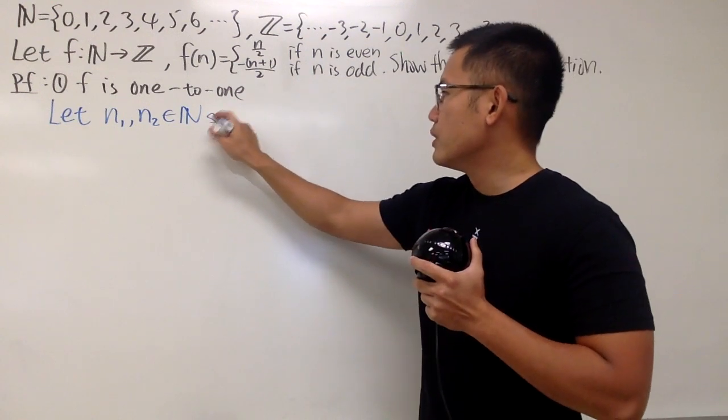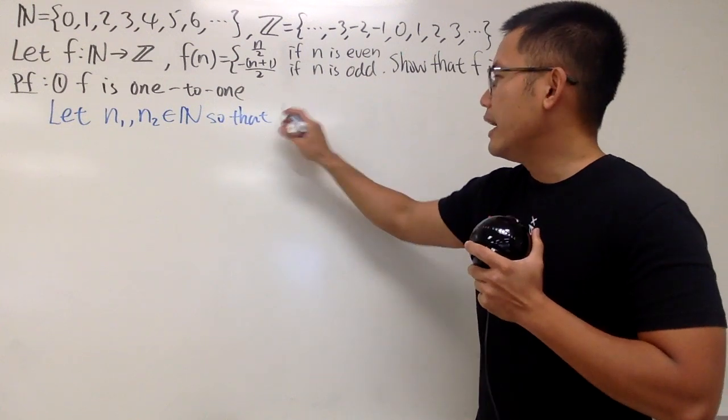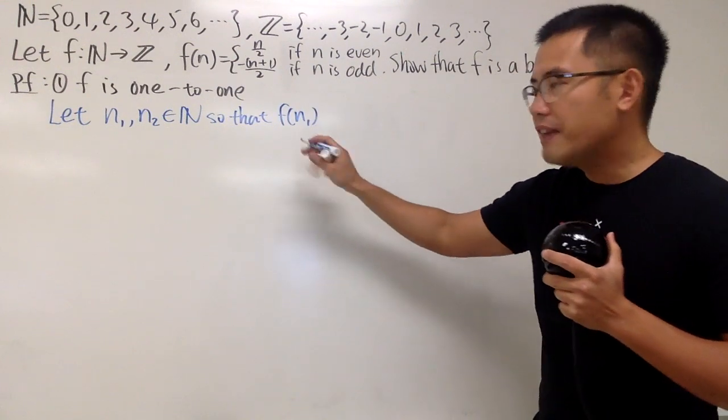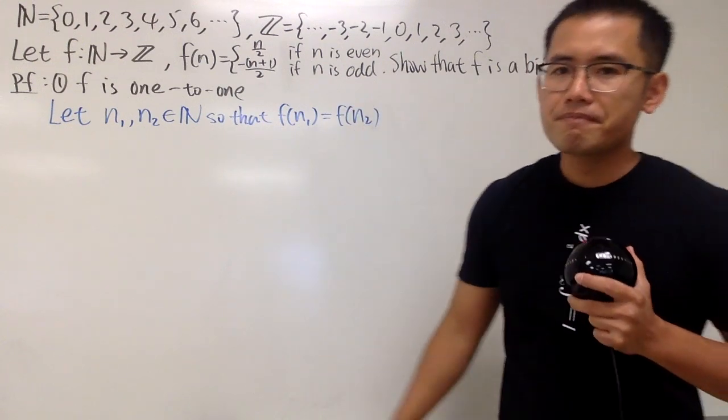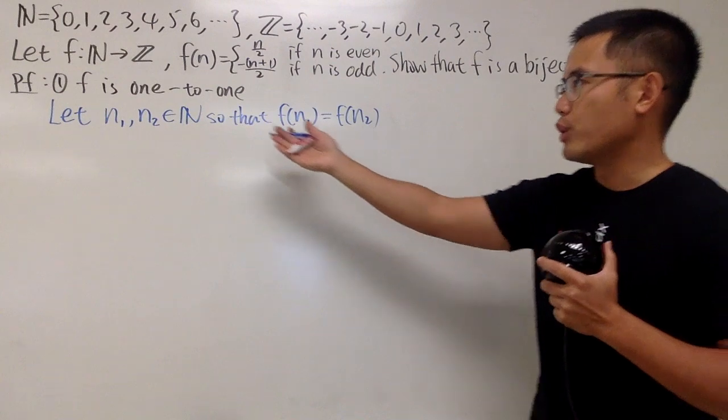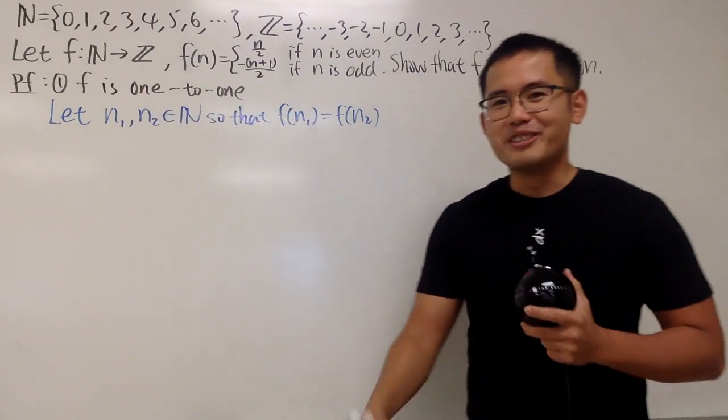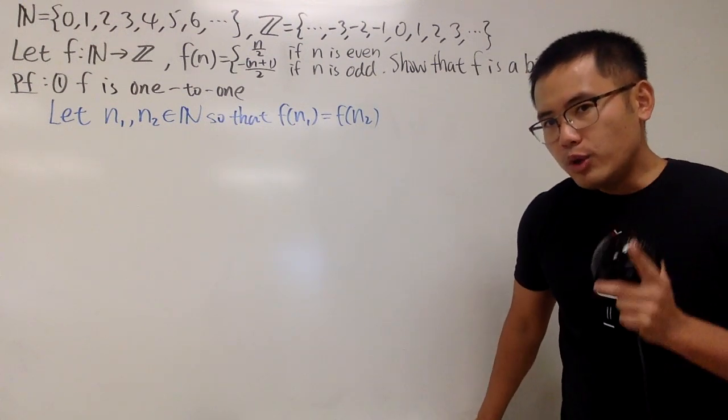So let's talk about what a one-to-one function is. This is how we start. First, we are going to pick two elements from the input set, which is the domain set right here. So I will just say that n1, n2 being the elements of N, like this. You just pick two elements right here. And you have to pick that, and you are going to assume that they have a special property.